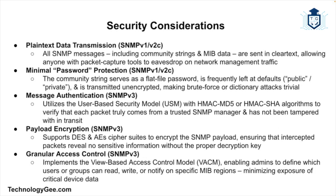SNMP has historically faced criticism for its lack of security, particularly with SNMP version 1 and version 2c. The main security issues include lack of encryption — SNMP v1 and v2c transmit data in plain text, making it susceptible to eavesdropping. There is also weak authentication, as the community string in SNMP v1 and v2c serves as a password but offers minimal security.